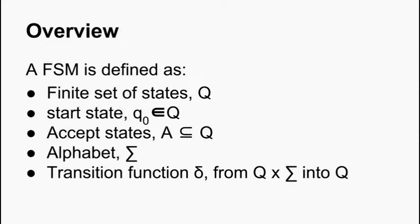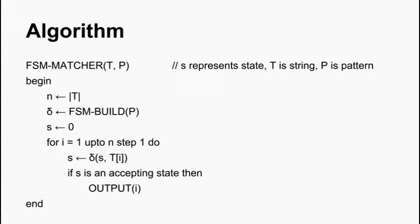Now, a finite state machine is defined as a finite set of states, a start state, a set of accept states, an alphabet and a transition function. And essentially it is a labelled directed graph.